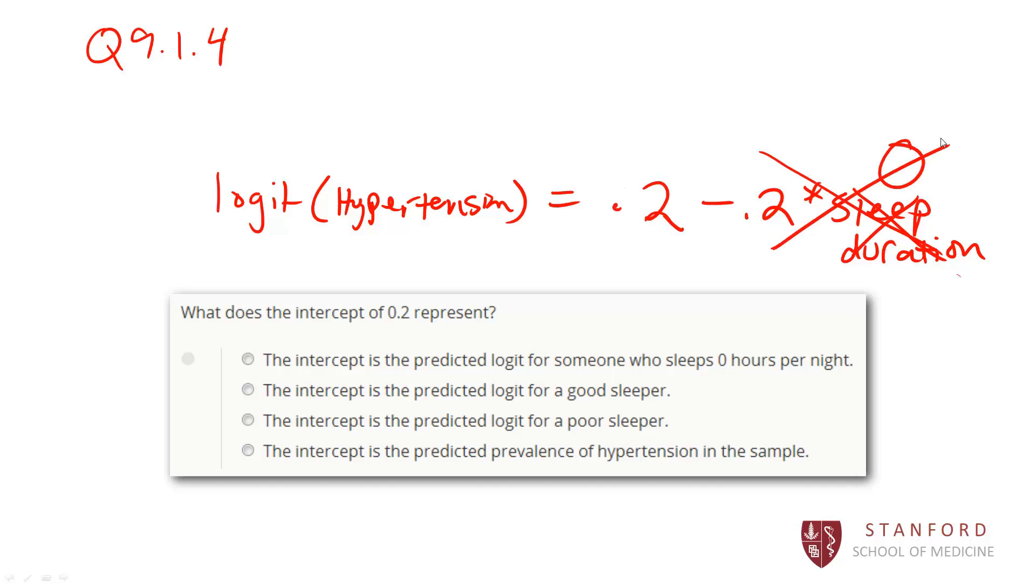That will make this whole term go out. So the intercept here represents the predicted logit, the predicted log odds of hypertension for someone who sleeps 0 hours per night. Of course, it's physiologically impossible to sleep 0 hours per night. So this person doesn't really exist. But that is what the intercept would represent.